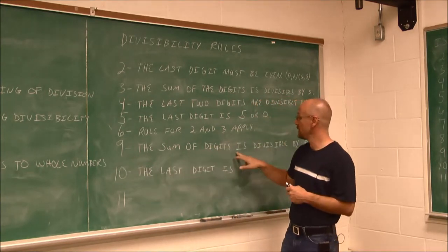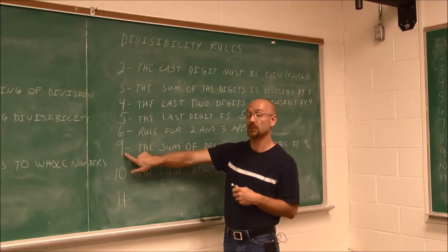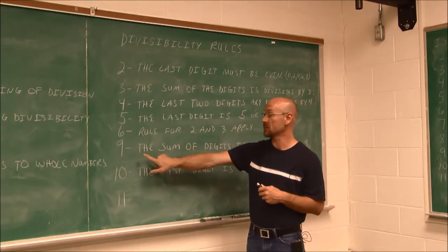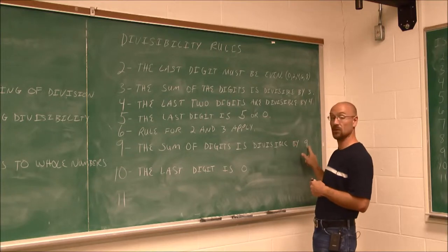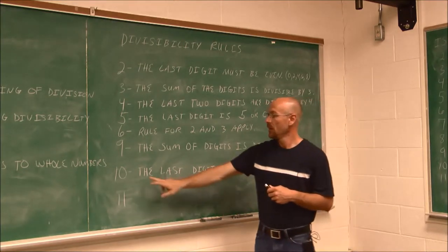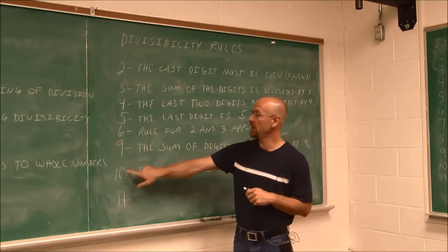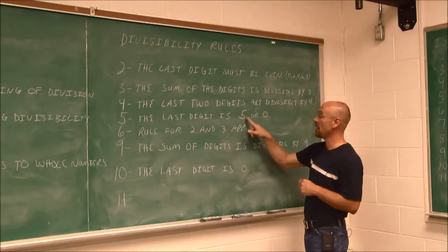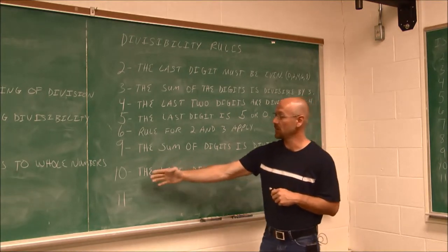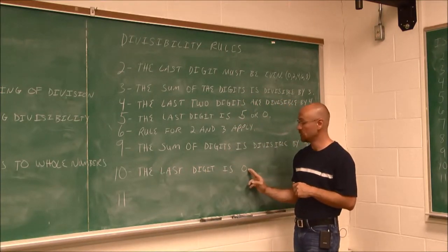For 9, the sum of the digits must be divisible by 9. If we think about it, 3 times 3 is 9, so the sum of the digits being divisible by 9 means it's divisible by 3 twice. For 10, the last digit ends in 0. That makes sense because 10 is 5 times 2, and the rule for 5 requires ending in 5 or 0 — here it's restricted to just 0.